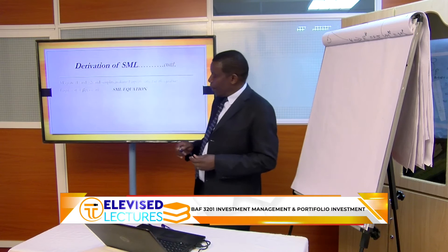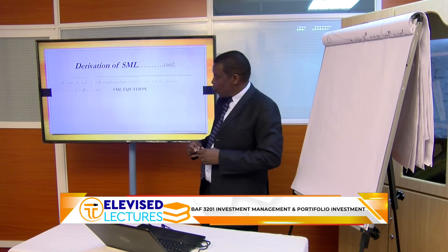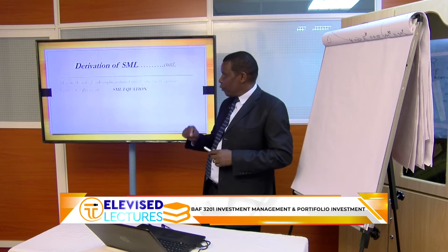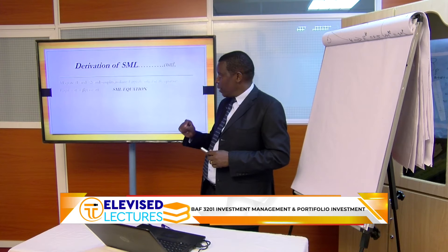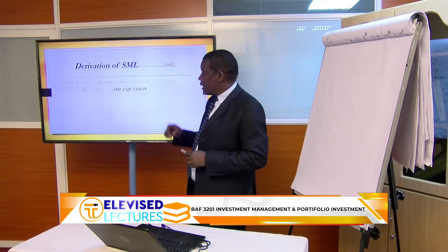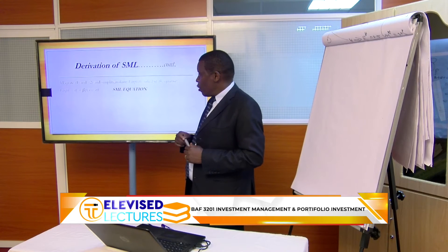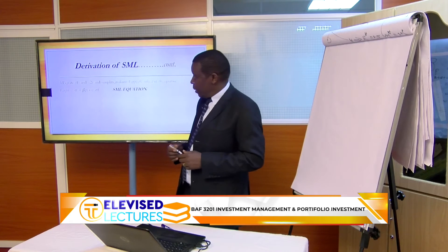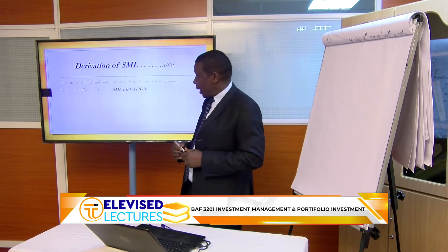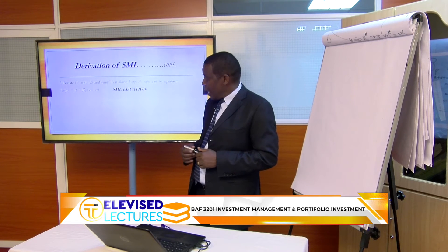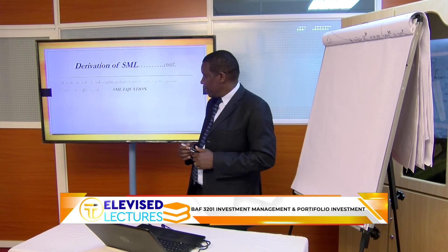Equations one and two are both relating to the slope of the same line. So because we are getting them from the same line, they should be equal. We are supposed to equate equation one and equation two and simplify. On simplifying, we make ERP the subject of the equation. Finally, we get E[R_P] equals R_F plus beta-P multiplied by (E[R_M] minus R_F). This is what we are calling the SML equation.